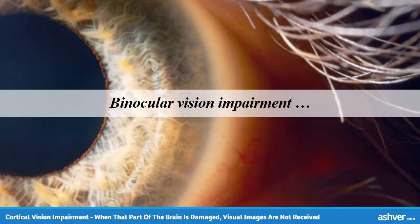For example, let's say a child has this binocular vision impairment but is able to move. He or she can see the chair but can't get in it — in other words, they might sit on the floor instead.